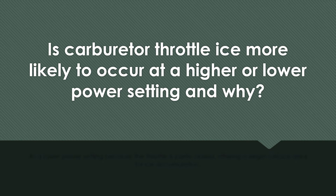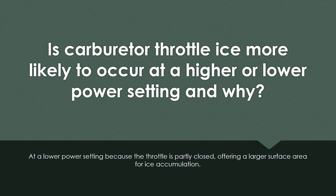Is carburetor throttle ice more likely to occur at a higher or lower power setting and why? At a lower power setting, because the throttle is partially closed, offering a larger surface area for ice accumulation.